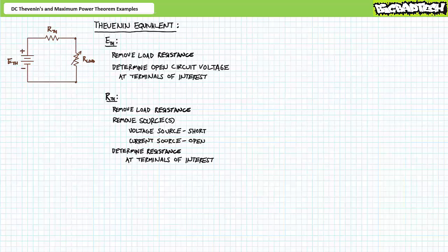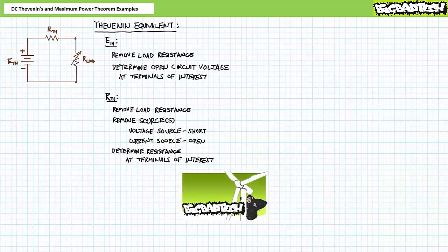Our objective is to examine several illustrated examples of Thevenin's Theorem and the Maximum Power Transfer Theorem. This lecture operates under the presumption the viewer has more than a passing familiarity with both theorems, as illustrated in the DC Thevenin's Theorem and DC Maximum Power Transfer Theorem lectures, both available at the Big Bad Tech channel. If you lack the requisite familiarity, please review that supporting material first.